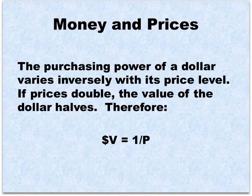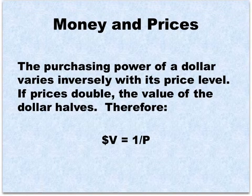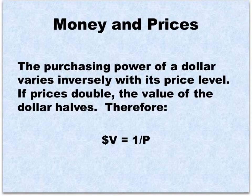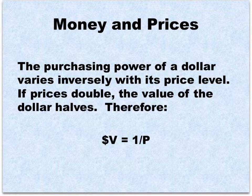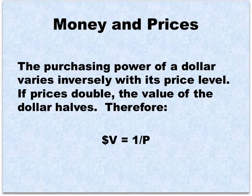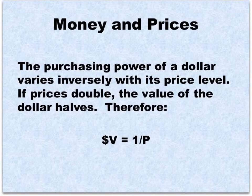Let's talk about money and prices. The purchasing power of a dollar varies inversely with the price level. If the price of a foot-long Subway sandwich increases from $5 to $10, clearly money must be worth half as much. Or if we double the amount of money, each individual piece of money is worth half as much, and therefore Subway will want $10, not $5 for the sandwich. There's an inverse relationship between prices and the value of money.